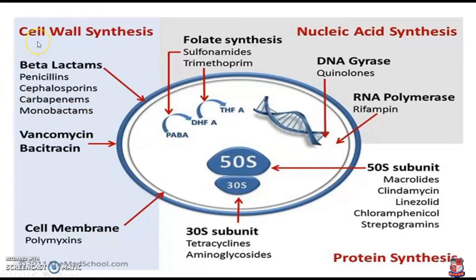The first group is the cell wall synthesis inhibitors. The beta-lactam antibiotics are the main group that inhibit cell wall synthesis. These include penicillin, cephalosporin, carbapenem, and monobactam. Other drugs in this class that also inhibit cell wall synthesis are vancomycin and bacitracin.